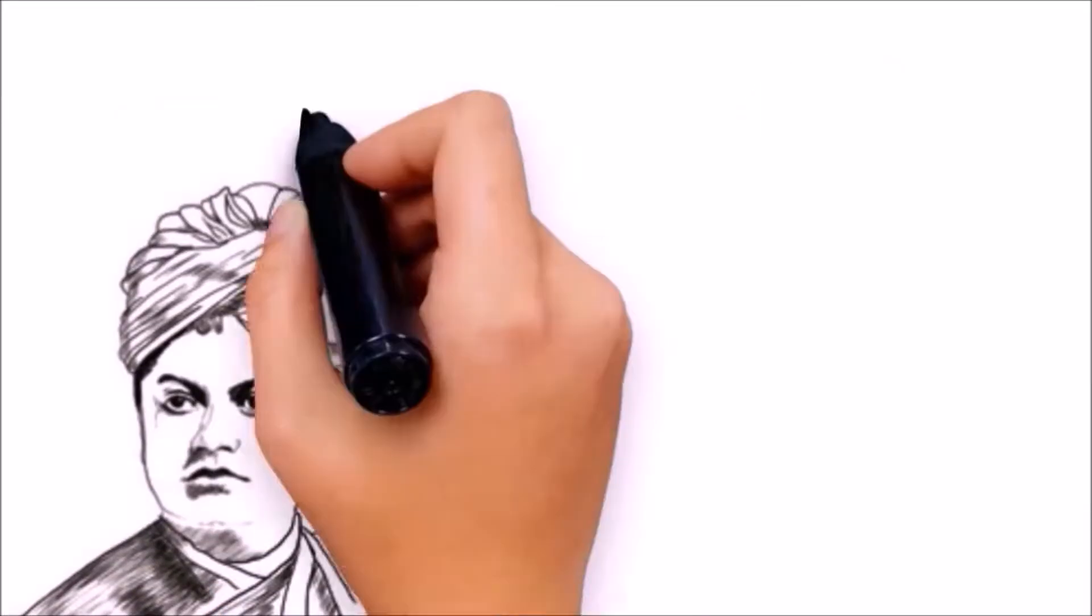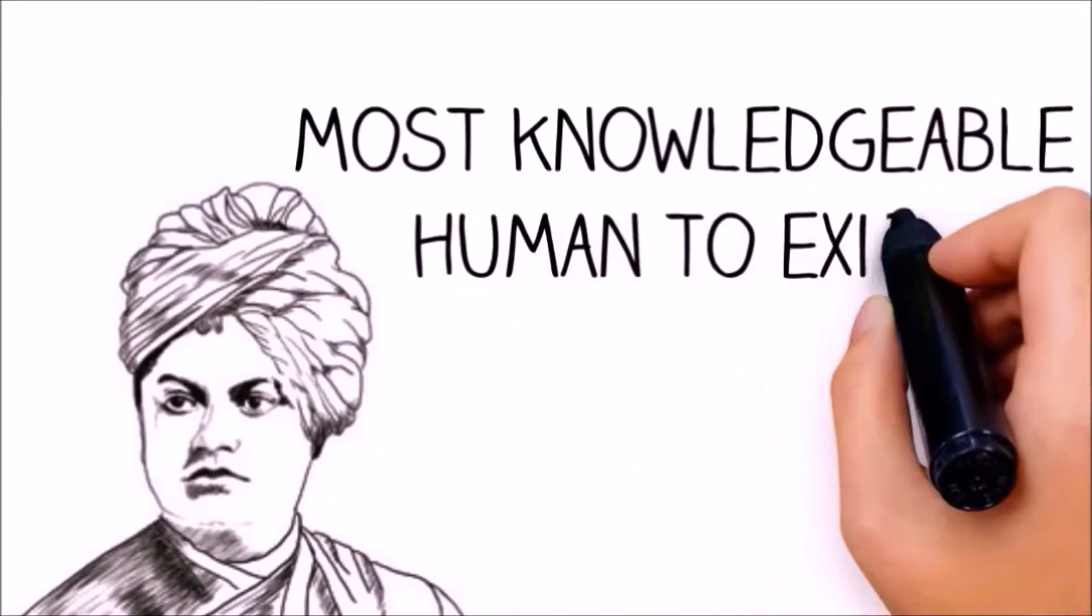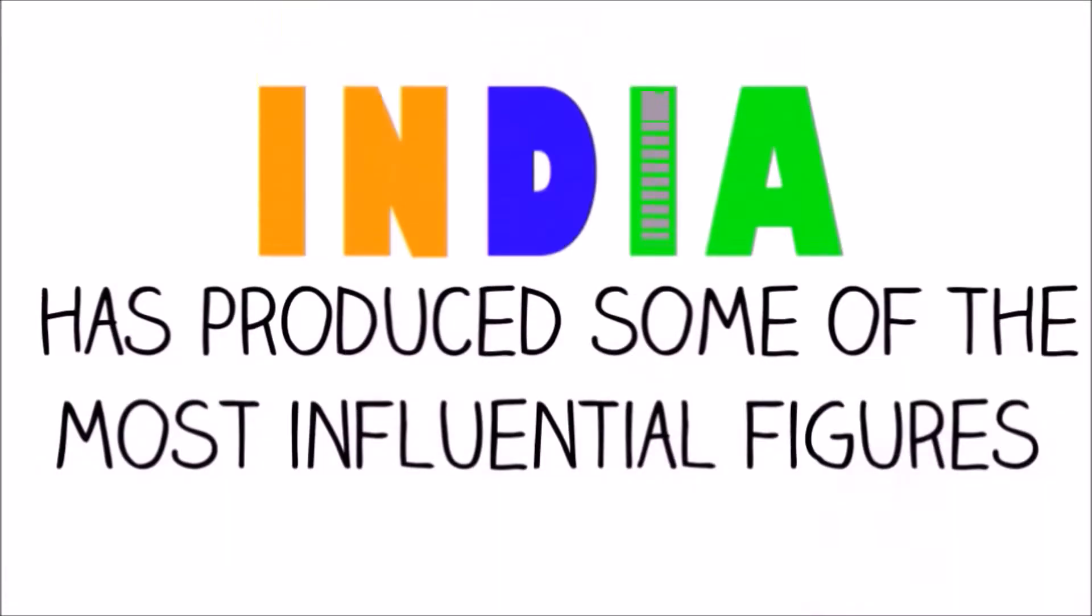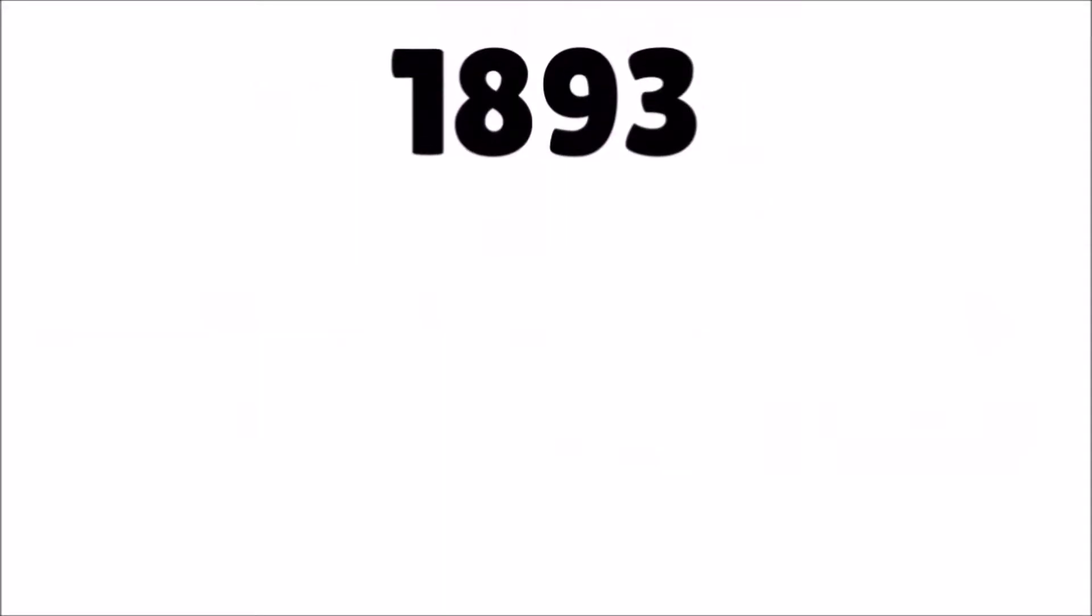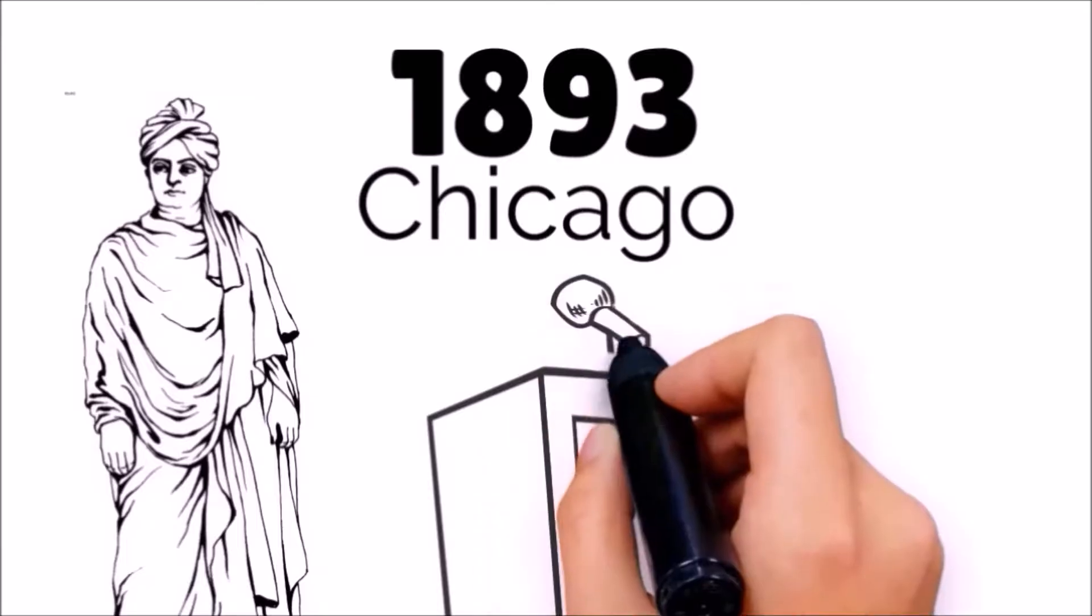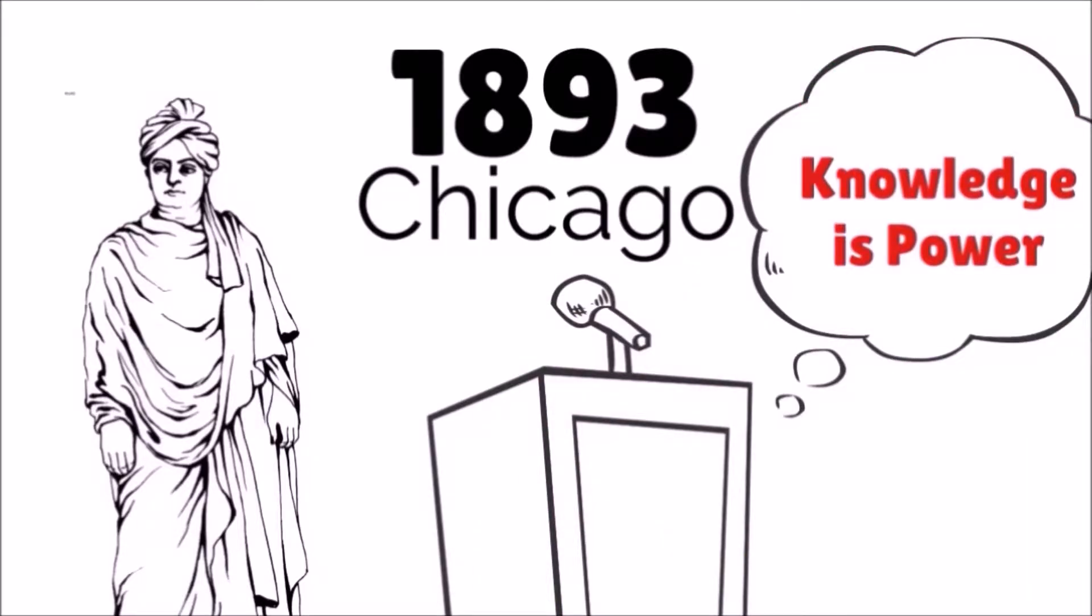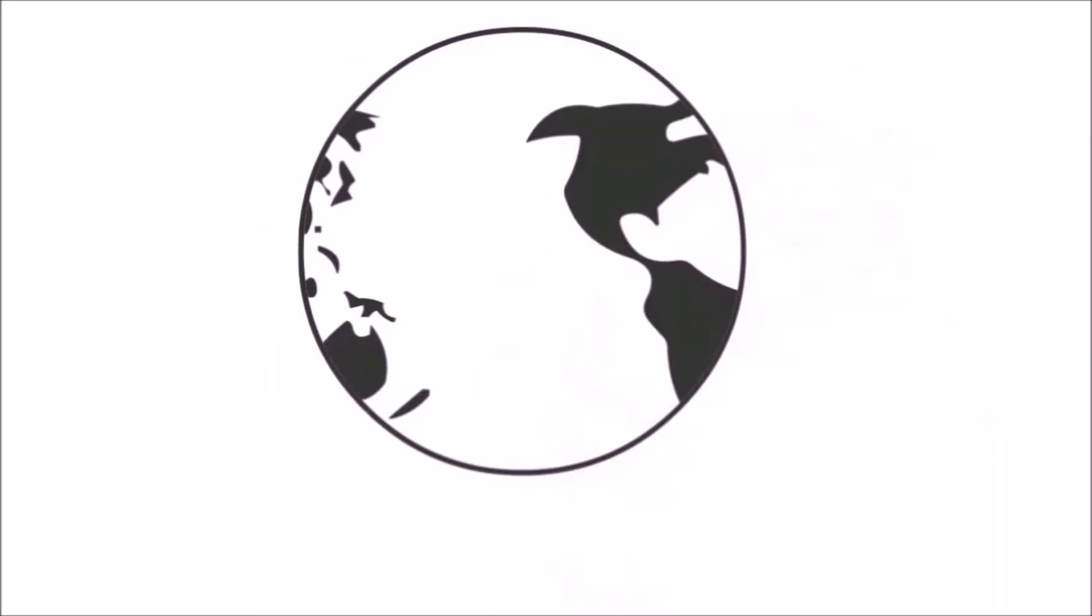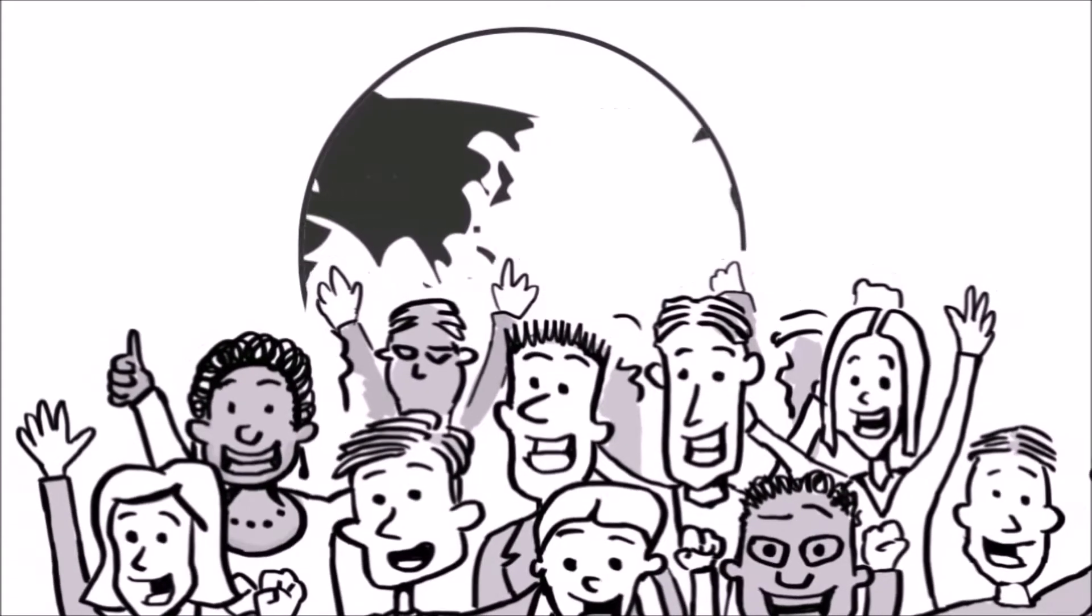to Swami Vivekananda, who is considered one of the most knowledgeable humans to exist. It was in 1893 in Chicago when Swami Vivekananda deciphered the true meaning of knowledge when he spoke on the topic, knowledge is power, and shocked the whole world and forced the world to take notice of the capabilities of Indians.